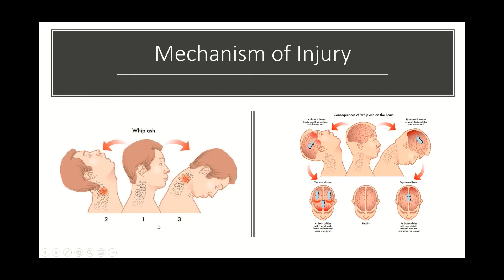That's the typical mechanism of a whiplash injury. With whiplash injuries, there's going to be stretching of ligaments, muscles, and tendons, as well as compression of those ligaments, muscles, tendons, and joints, as well as the disc tissue and everything else that's in the cervical spine region.